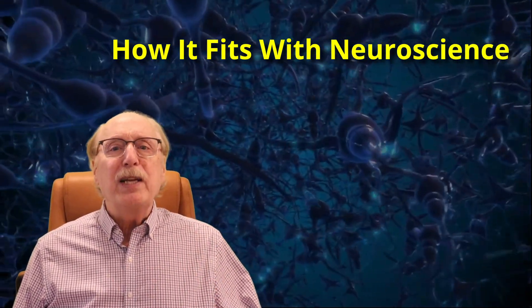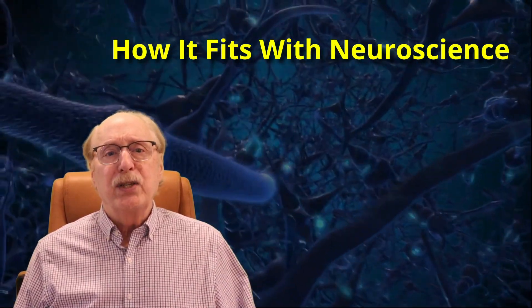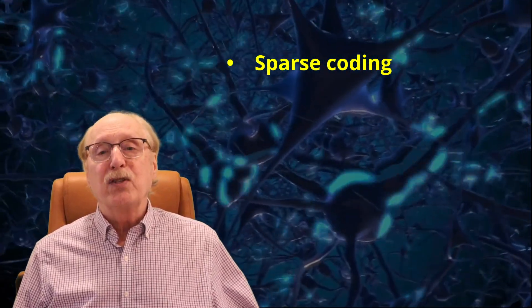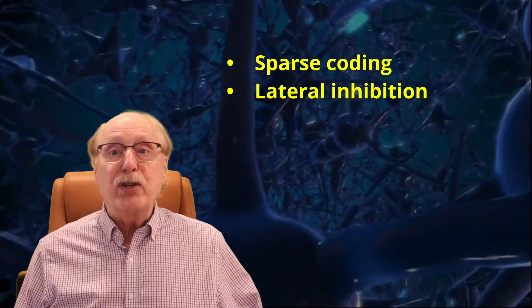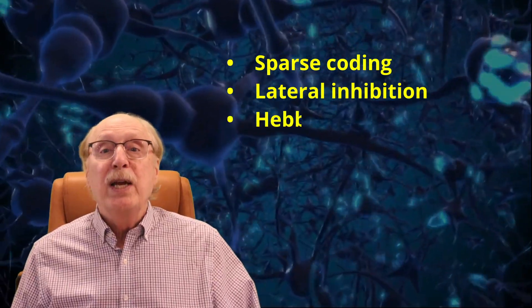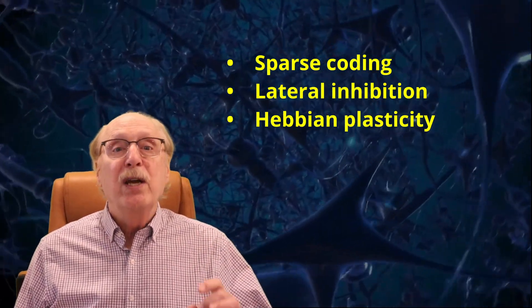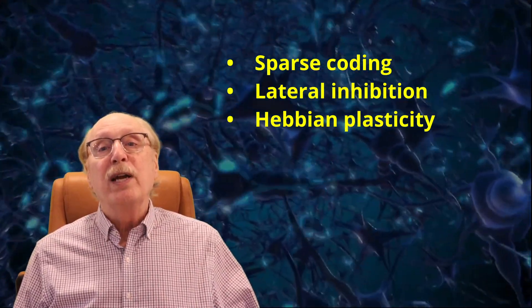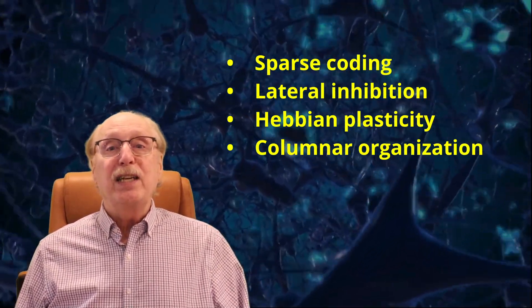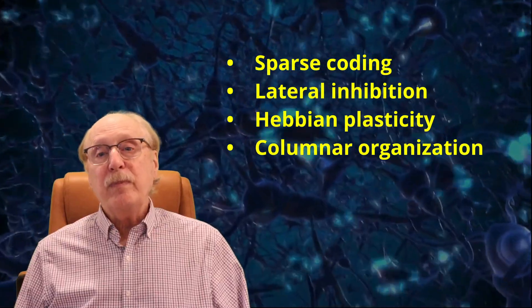This simulation reflects real neuroscience. It shows sparse coding where only one column out of many fires. It uses lateral inhibition, just like the olfactory bulb or the visual cortex. It's built on Hebbian plasticity, which has decades of experimental support, and it reflects the columnar organization which has been documented since the 1950s. And unlike many AI theories, this one doesn't wave its hands — it's a real testable spike-based circuit that you can simulate, measure, and evolve.